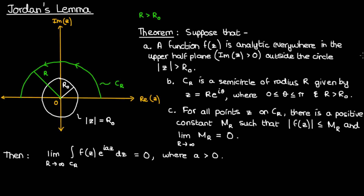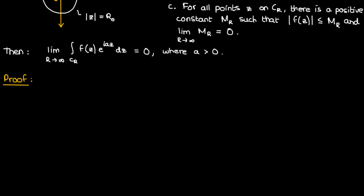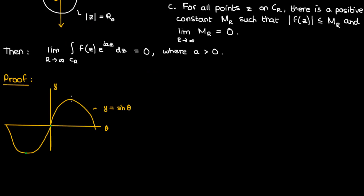For this video we're going to go ahead and prove this lemma. The proof starts out a bit awkwardly because it doesn't seem very related to Jordan's lemma but it will come together at the end. We're going to start by graphing two functions on the Cartesian plane: y equals sin θ and y equals 2θ/π. 2θ/π is just a straight line through the origin that becomes 1 at θ equals π/2, just like how sin θ becomes 1 at θ equals π/2.